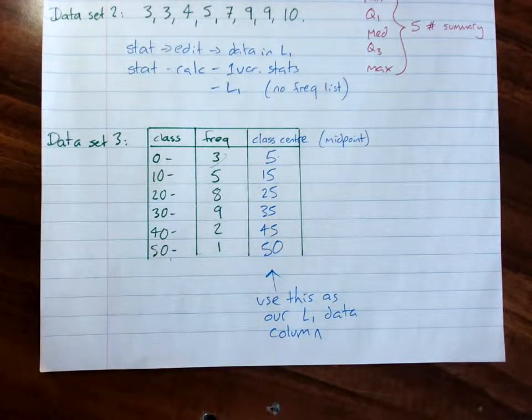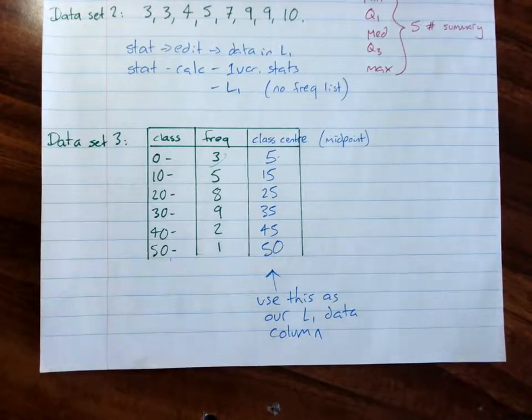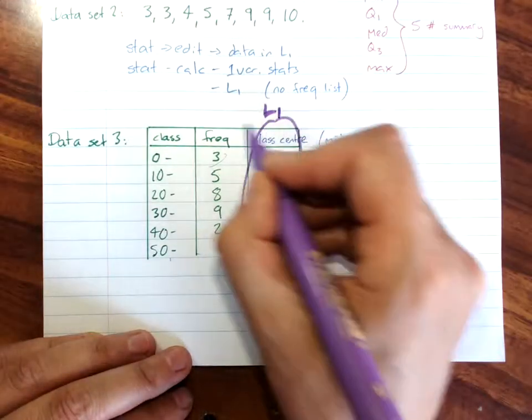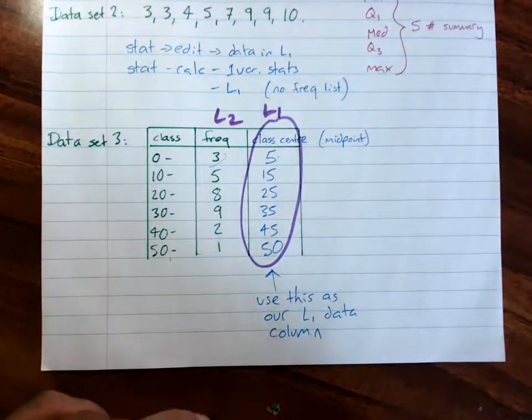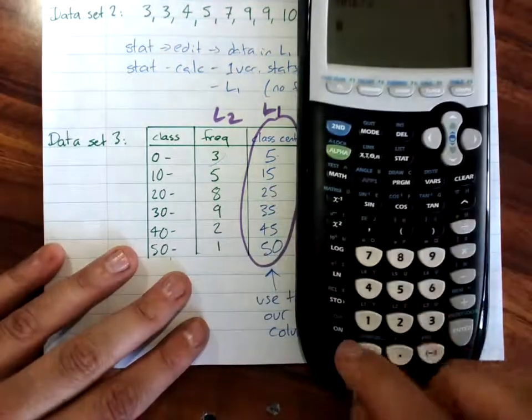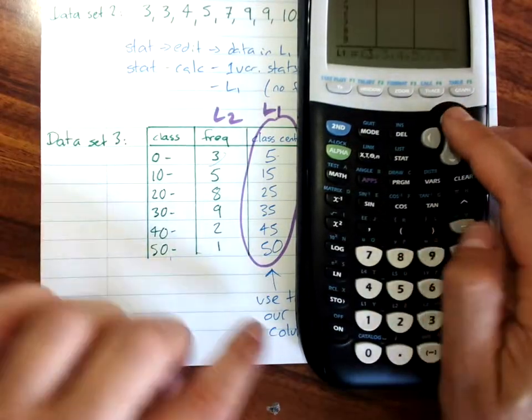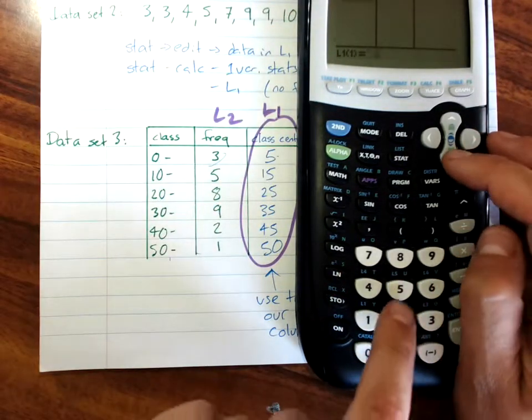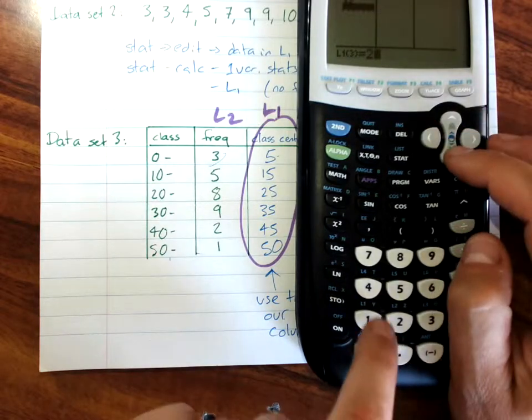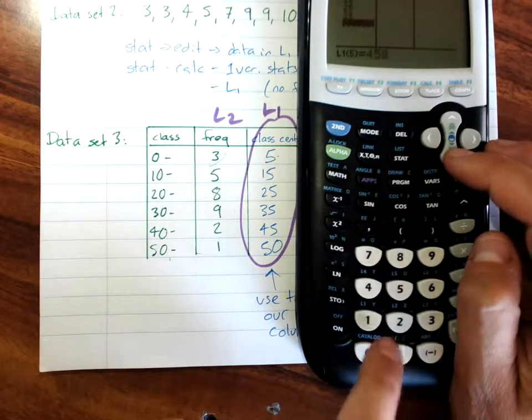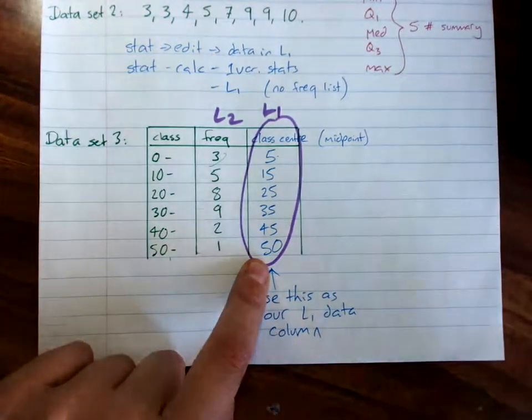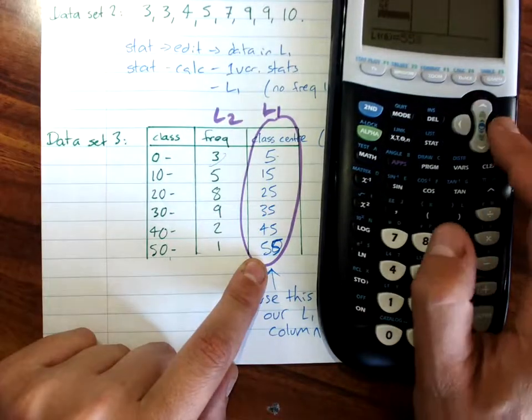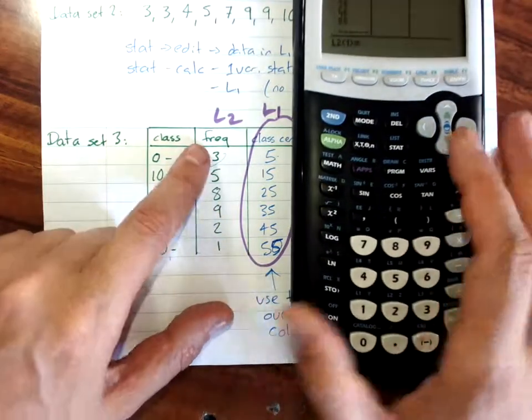It's a good idea, if you're doing this in a test, to highlight the fact that you want this one first. L1, L2. Because it'll end up backwards and it might confuse you. Stat, edit, clear your data. So down L1, we want our class centers. And guess who made a mistake down here? 55.